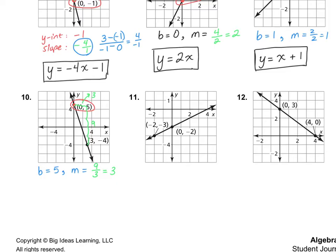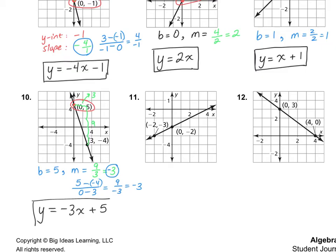That one's a little harder, so sometimes you need to use the slope formula to double check. My y numbers are 5 and negative 4, and my x numbers are 0 and 3. That's 5 plus 4, which is 9, over negative 3. I did make a mistake — it is heading in the negative direction, so I need a negative in front of the 3. So the answer is y equals negative 3x plus 5.